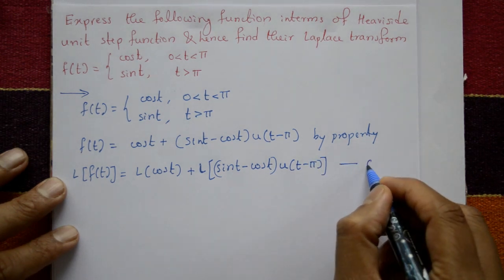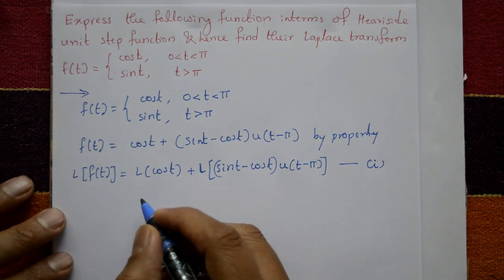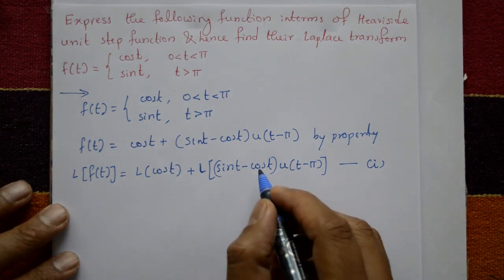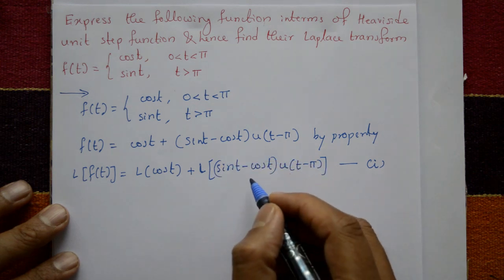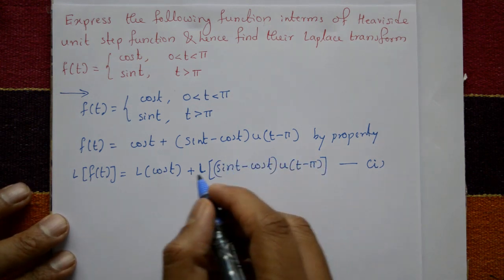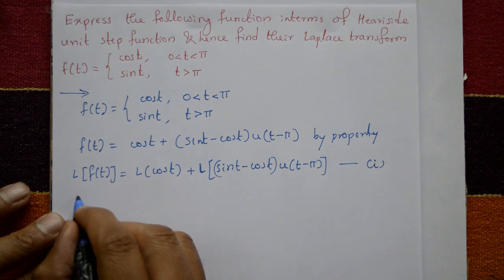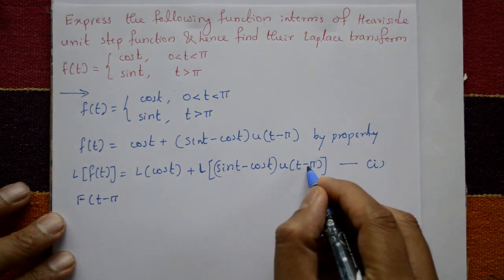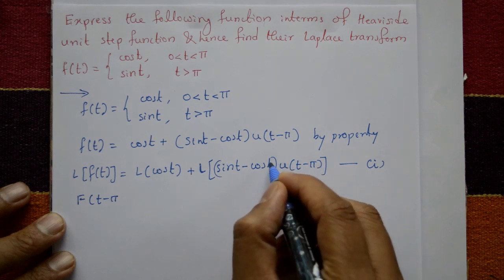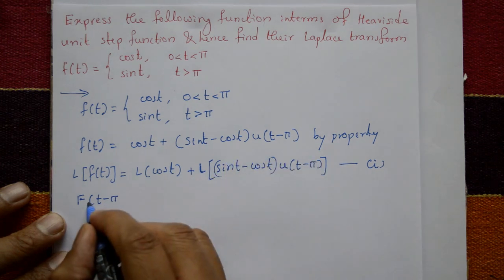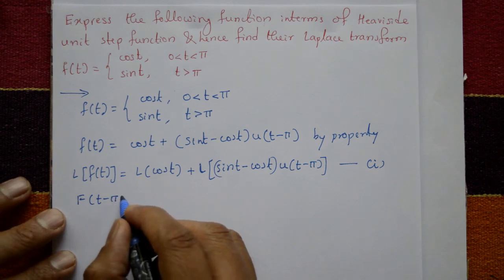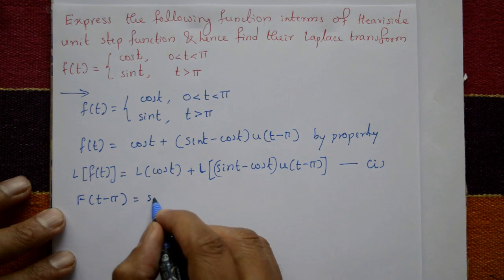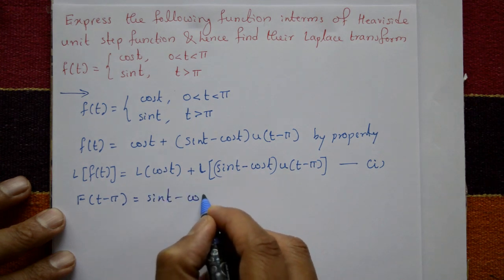Now consider the second part. Using the second shifting property with a = π, we identify f(t − π) = sin(t) − cos(t), since u(t − π) is the unit step shifted by π.